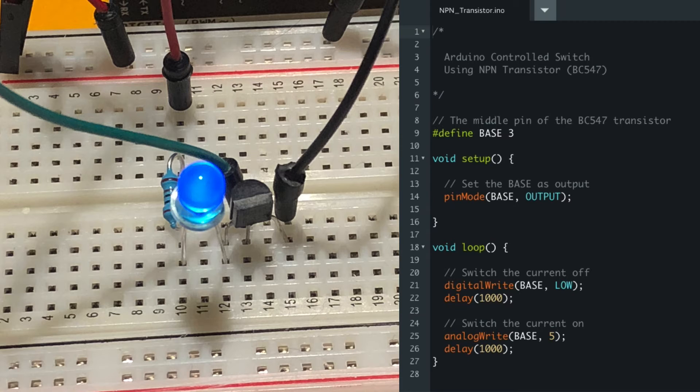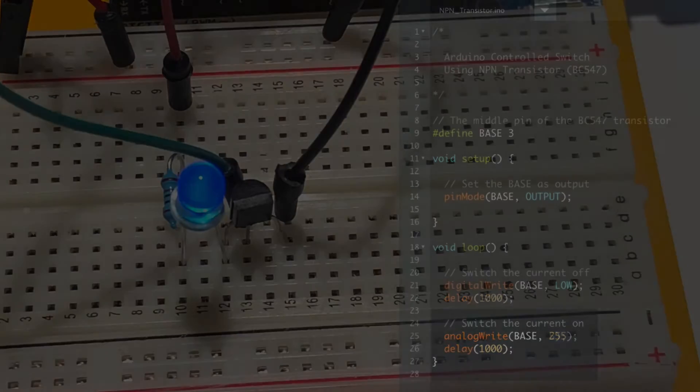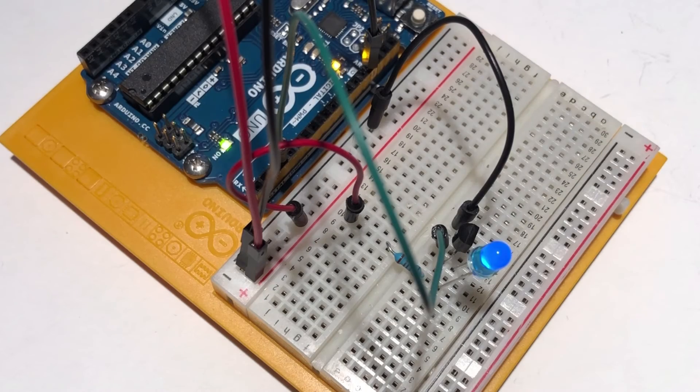We set the base low for a second, then set it high for a second. We can control with PWM, so we can control how much current flows according to our needs. We're only blinking an LED at this point, so we just set it high or low.